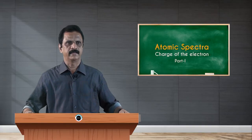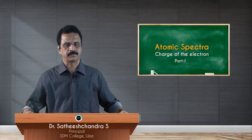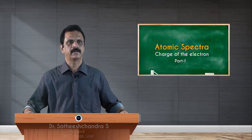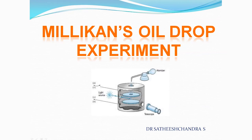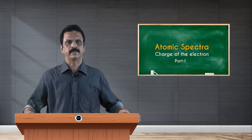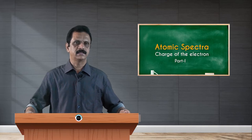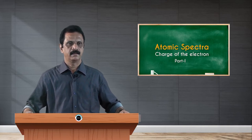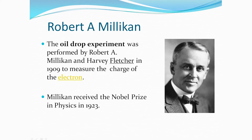Hello, good morning friends. Today we will discuss about Millikan's oil drop experiment — the experiment used by Millikan to determine the charge of the electrons. We have studied that in the year 1897, J.J. Thompson discovered electrons, one of the important constituents of atoms, and he also determined the charge to mass ratio of the electrons. Some more important characteristics of electrons were found by other scientists.